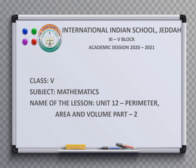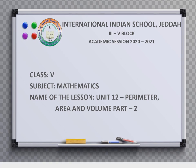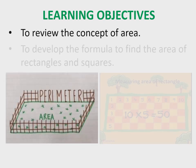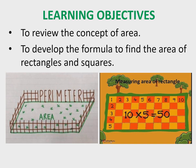Good morning children. Today you will learn Part 2 of Unit 12: Perimeter, Area and Volume. In this session you will learn the concept of area and the formula to find area of rectangles and squares. Learning objectives: to review the concept of area, and to develop the formula to find the area of rectangles and squares.